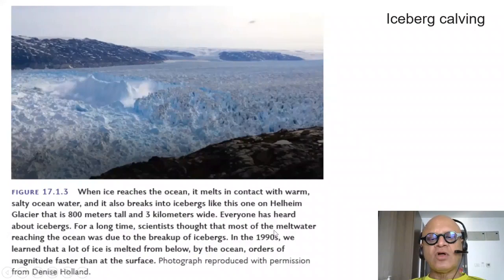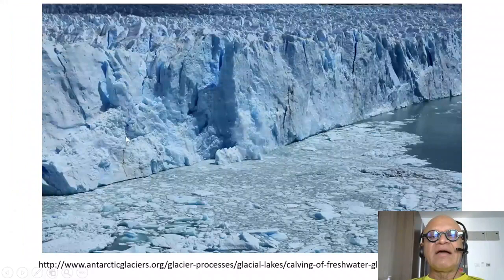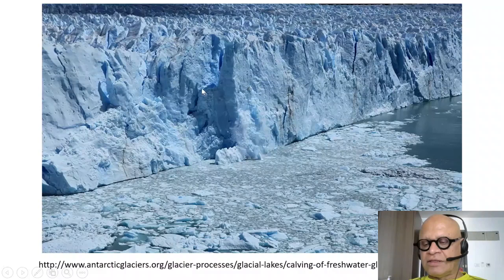For a long time, scientists thought that most of the meltwater reaching the ocean was due to the breakup of icebergs. But from the 1990s, much more data shows that ice melts a lot from below — orders of magnitude faster than melt at the surface. Here is another example of stretching and breaking of icebergs as they hit water. The density of the iceberg, the temperatures, and the strain as it gets stretched while flowing down into the water determine the size of the chunks that break off.